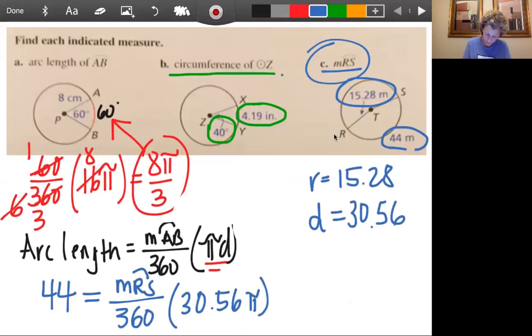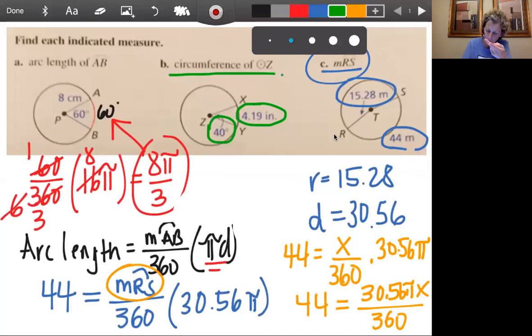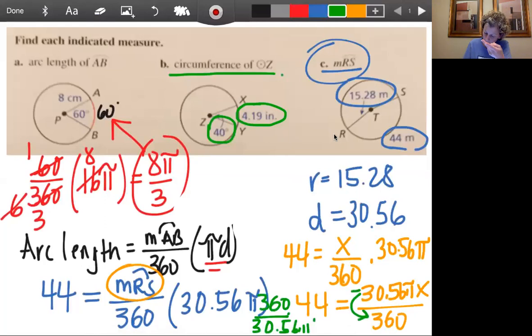And this one looks all kinds of crazy, but what we have here, let's go ahead and call this X. Okay. To make that a little bit easier as far as the math. And so we go 44 equals X over 360 times 30.56 pi. Okay. Let's clean this up a little bit. Or actually, I want you to think about it this way. Another way to write this would be 44 equals 30.56 pi X over 360. Do you see that? And so to get X by itself, I just have to take the reciprocal. So I'm going to multiply both sides by 360 over 30.56 pi.